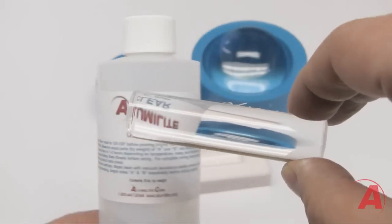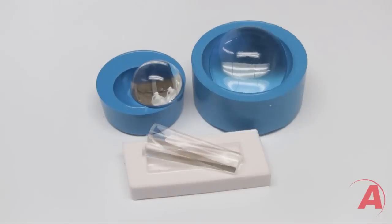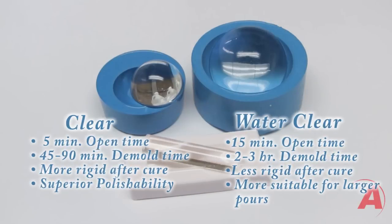The Alumalite Clear has a five minute open time, which gives you about a 45 to 90 minute demold time. The Alumalite Clear also cures to a highly rigid surface, therefore making it very suitable for polishing.